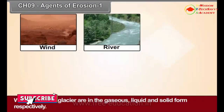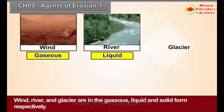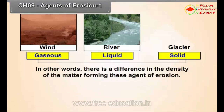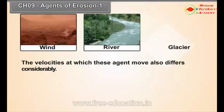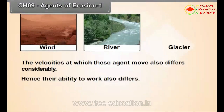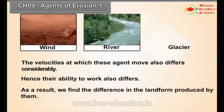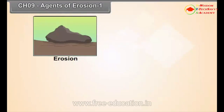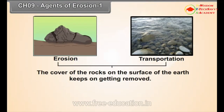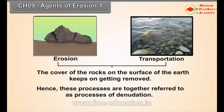Wind, river and glacier are in the gaseous, liquid and solid form respectively. There is a difference in the density of the matter forming these agents of erosion. The velocities at which these agents move also differ considerably. Hence, their ability to work also differs, and as a result, we find differences in the landforms produced by them. Through erosion and transportation, the cover of rocks on the surface of the earth keeps getting removed. Hence, these processes are together referred to as processes of denudation.